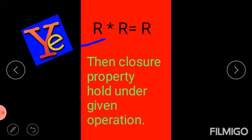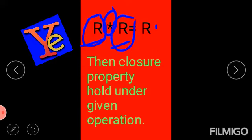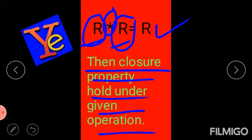To explain again: if we apply any operation — addition, subtraction, multiplication, or division — between two real numbers and we get a real number as the result, it means closure property holds under that given operation. If we are not getting a real number again, then closure property does not hold.